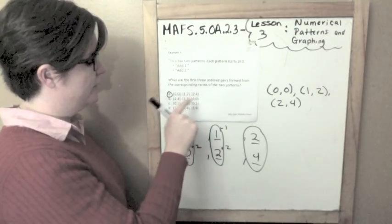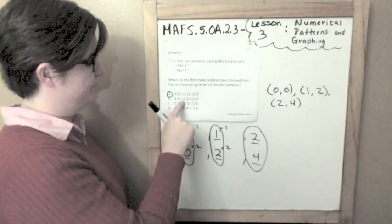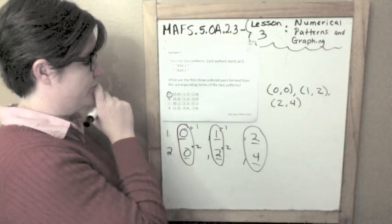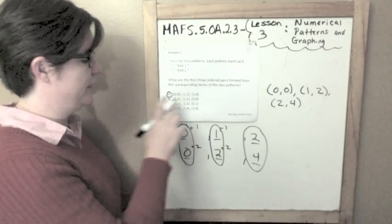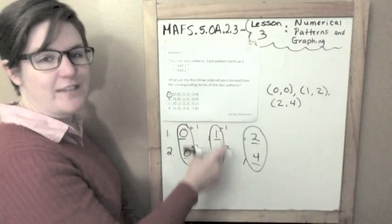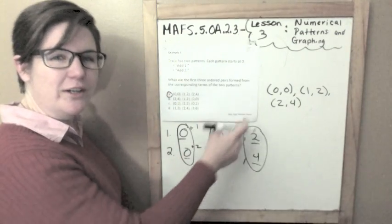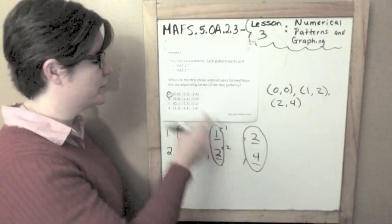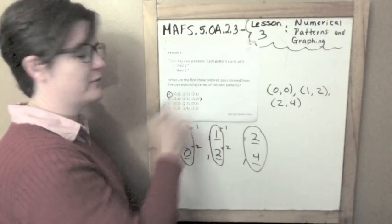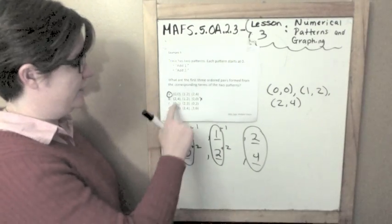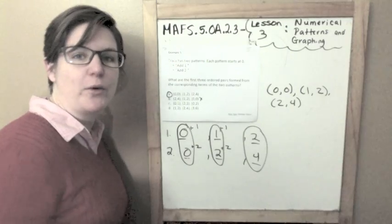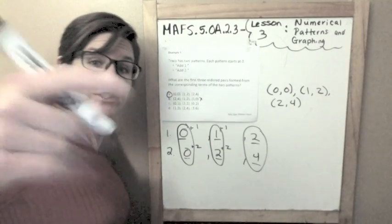This one is kind of tricky. Because some answer choices aren't going in the same order of corresponding terms, that's how you could eliminate those. The other ones aren't even the ordered pairs we picked. So that's how you do it.